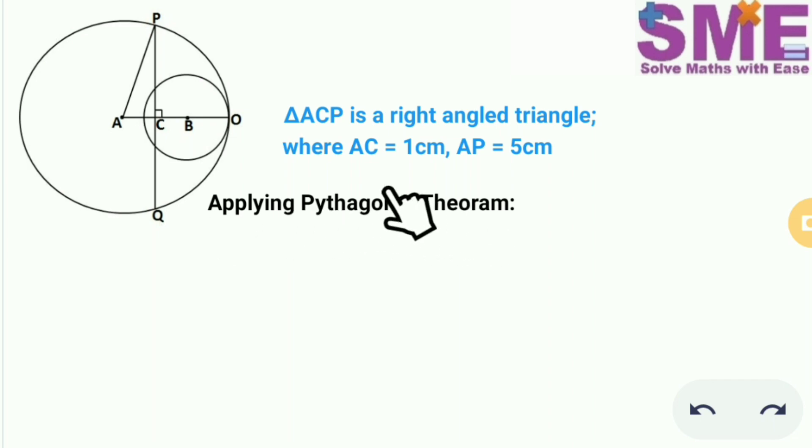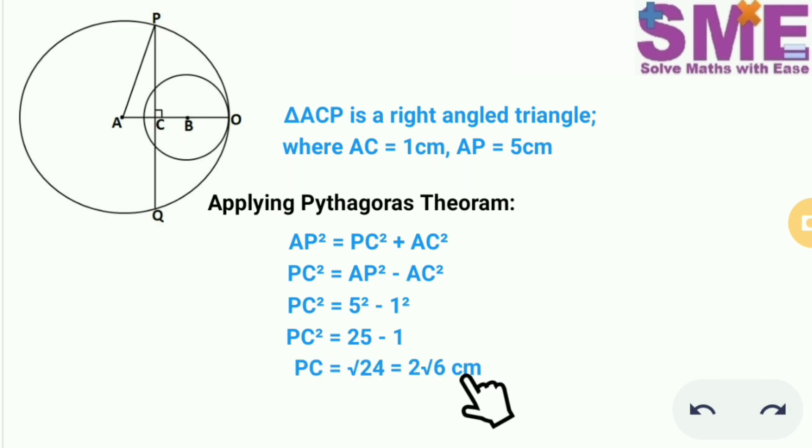Now applying Pythagoras theorem to this right angle triangle ACP, we get AP² = PC² + AC² where AP is the hypotenuse. So PC² = AP² - AC². Now we will substitute the values of AP as 5 and AC as 1. So we get the value of PC as 2√6 cm.